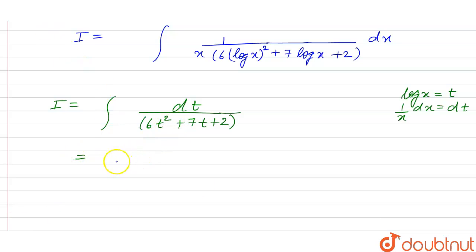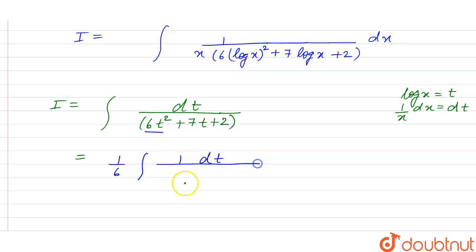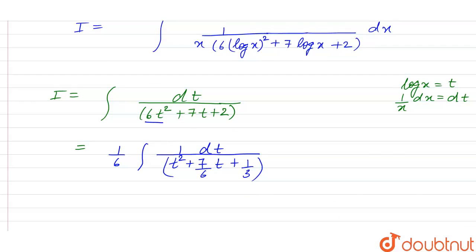On further solving, in this type of question we try to make the coefficient of t squared equal to 1. So taking 1 by 6 common, we have dt upon t squared plus 7 by 6 t plus 1 by 3.